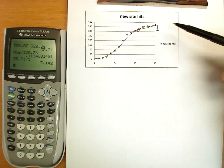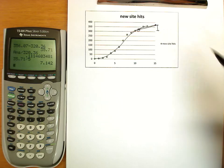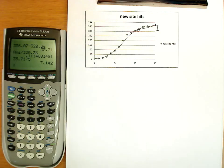Still a slope, so its units will be new hits per day. Or in this case, yeah, new hits per day.